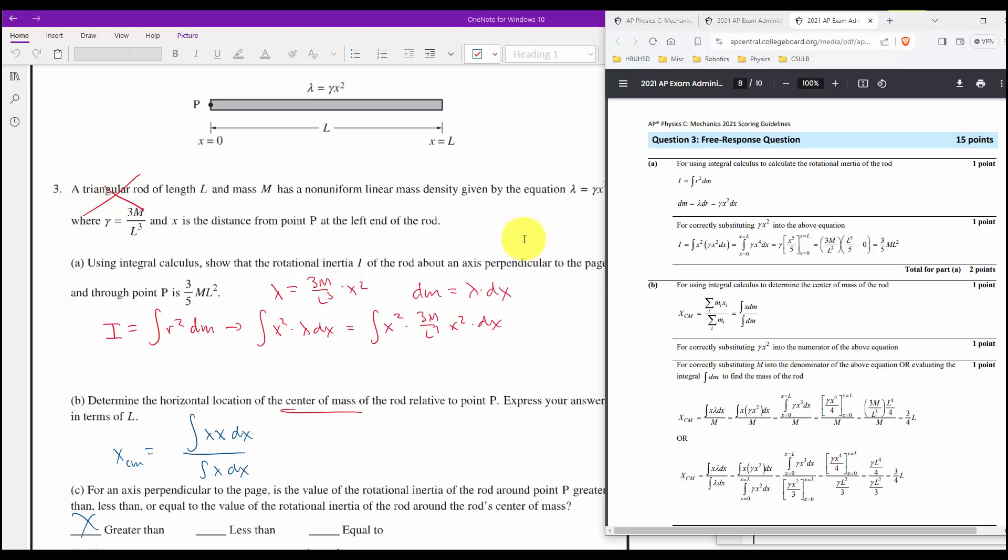Let's see what we got for part A, for using integral calculus to calculate the rotational inertia of the rod. So for using integral calculus, we get a point, even though they said to use integral calculus. I'm taking it. So one point for writing that equation, I guess. And then for correctly substituting gamma X squared into the above equation, you get a point. But then you have to do all the calculation. I mean, yeah, this earlier FRQ, same thing. That's like, for starting it, you get a point, but then there's all these steps, and it doesn't say for correct answer. So I don't know. I guess I'm going to put that in as a, I just don't know what to do here. So this or this is plus one, I guess. This college board man.